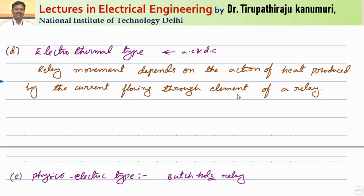Next is the electro-thermal type, which can be used for both AC and DC. As the name suggests, electric current produces heat. The relay movement depends on the action of heat produced by the current flowing through the element. Since heat is proportional to I-squared, it is based on the RMS value — that is why it works the same for both AC and DC.